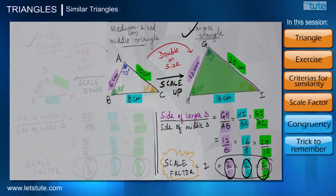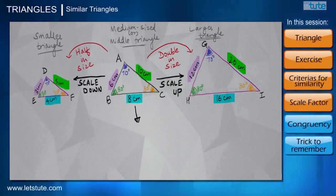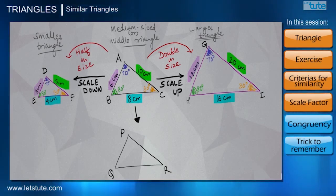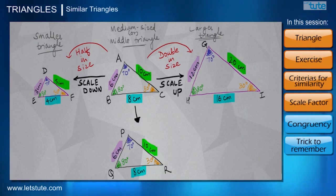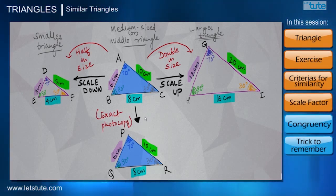But wait, there is another possibility. There will be another triangle which will not only have the exact same angle measure as triangle ABC, but all of its sides will also be exactly the same. Or in other words, I can say it will be the exact photocopy of our given triangle ABC.